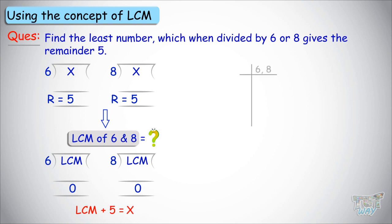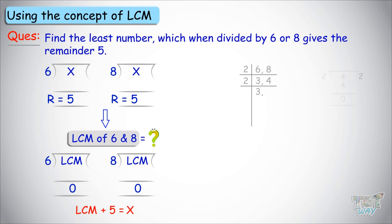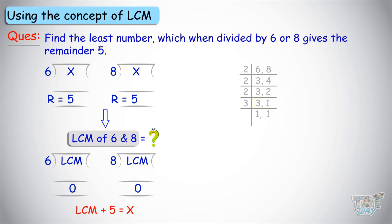Writing 6 and 8 in a row using the smallest prime number, 2: 6 divided by 2 is 3, and 8 divided by 2 is 4. Again using 2: 3 is not divisible by 2, and 4 divided by 2 is 2. Now we have 3 and 2. 3 divided by 2 is not possible; 2 divided by 2 is 1. Now use the number 3: 3 divided by 3 is 1, and 1 divided by 3 gives 1. Now multiply all prime numbers on the left side: 2 × 2 × 2 × 3 = 24. So the LCM of 6 and 8 is 24.